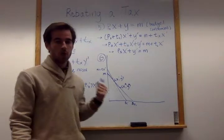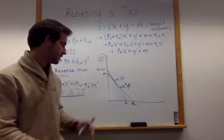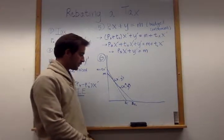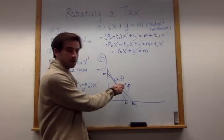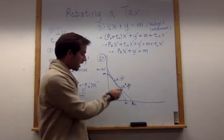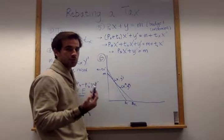Now we know also, based on revealed preferences, that if the consumer had the choice to consume anything on this line previously, and they chose this bundle X star, Y star, that they're not going to be consuming anything that they couldn't have already consumed before, because they're rational.